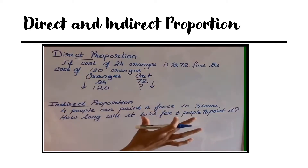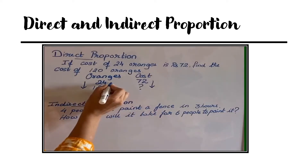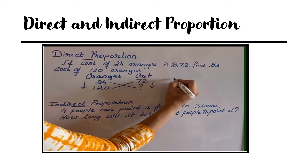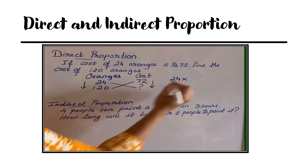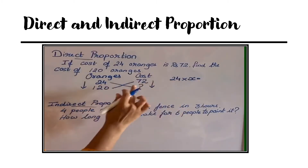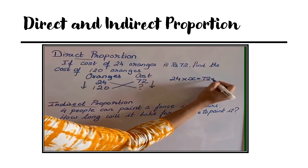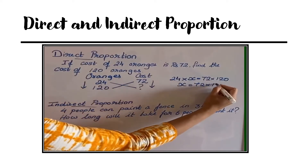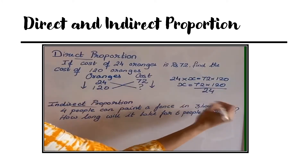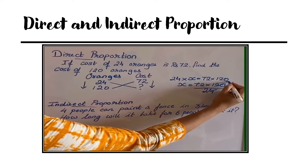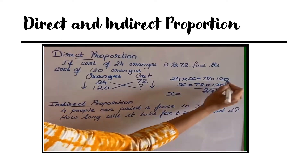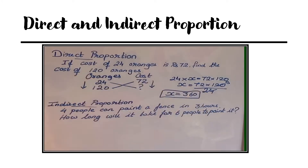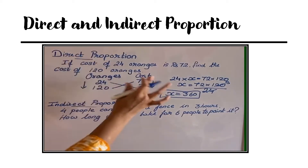To solve direct proportion questions, we have to do cross multiplication. Let's do cross multiplication to find this unknown — let's take it as x. So, 24 into x equals 72 into 120. Moving 24 to the right-hand side gives division. Doing cancellation: 120 divided by 24 is 5, then 72 into 5 is 360. So the cost of 120 oranges is rupees 360. This is a direct proportion example.